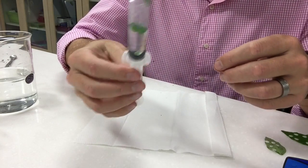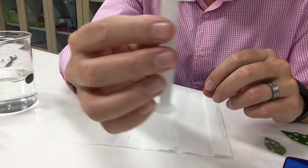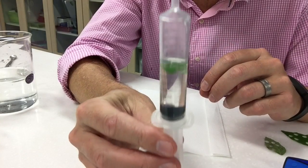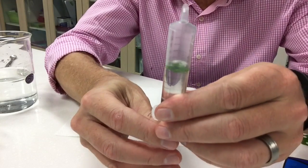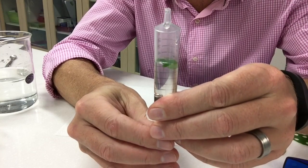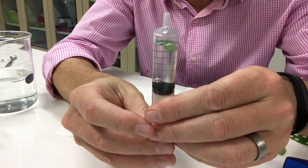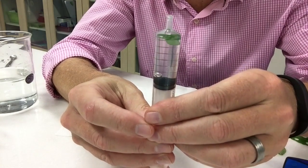So now you've got the solution of discs in the leaf and you can see they're all floating. So the way you get rid of this air and to try and get them to sink is to push them close to the top.